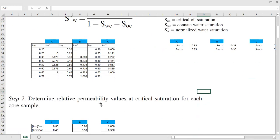Second step, step two. Determine relative permeability values at critical saturation for each core sample. And we already know that from the data given. So here, the relative permeability at critical saturation means relative permeability of oil at connate water saturation, and vice versa, the relative permeability of water at residual oil saturation. And it's very easy, we just take from the data given.